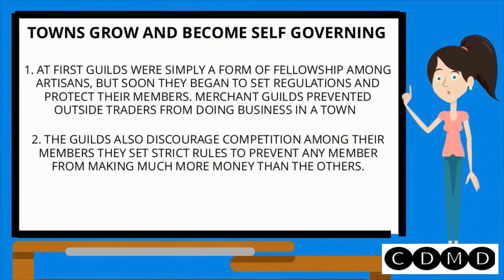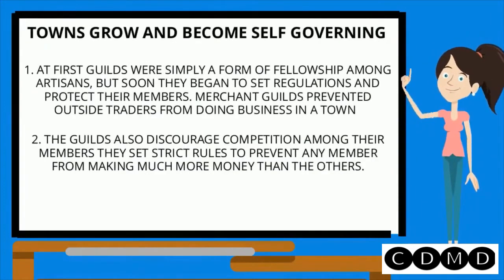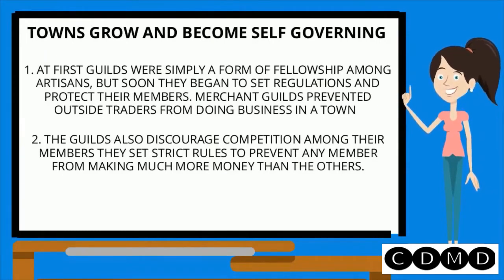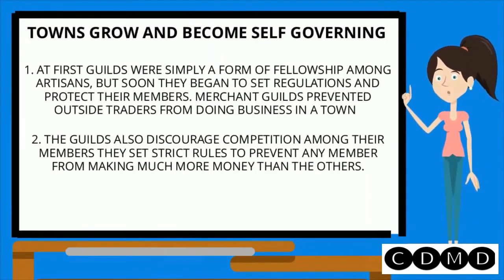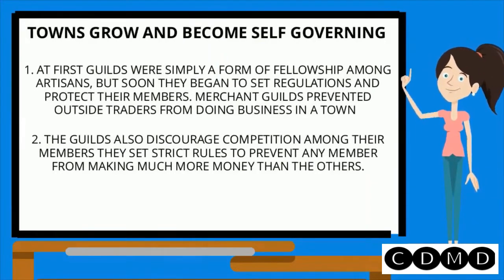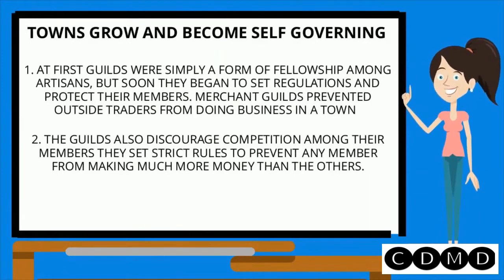Towns grow and become self-governing. At first, guilds were simply a form of fellowship among artisans, but soon they began to set regulations and protect their members. Merchant guilds prevented outside traders from doing business in a town. The guilds also discouraged competition among their members, setting strict rules to prevent any member from making much more money than the others.